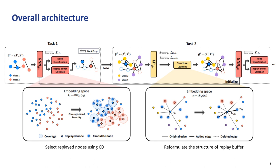The overall framework is presented in this figure. As the task progresses, it operates by selecting replay nodes after conducting downstream tasks such as node classification. When a new task begins, it proceeds by performing Structure Learning between the new nodes and replay nodes, and then carrying out downstream tasks.